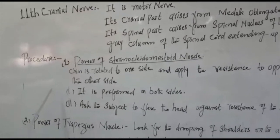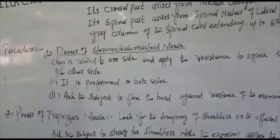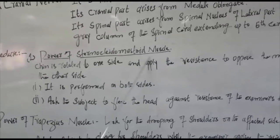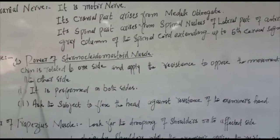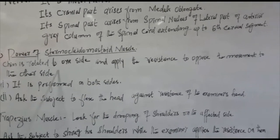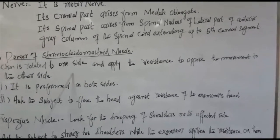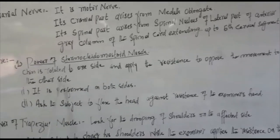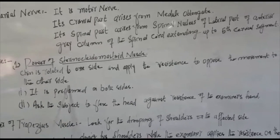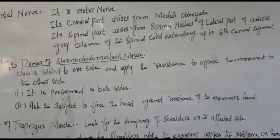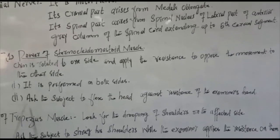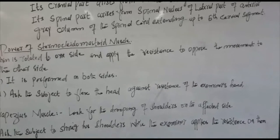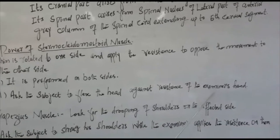Procedure: we will check the power of the sternocleidomastoid muscle in this test. The chin of the patient is turned to one side and resistance is applied to oppose the movement to the other side. It is performed on both sides. Ask the subject to flex the head against the resistance of the examiner's hand.